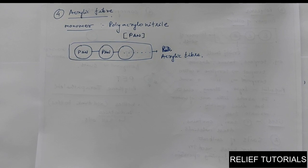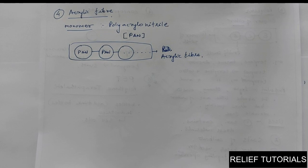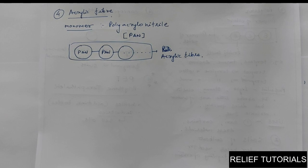Each fiber is made from a particular type of monomer. Rayon is made from cellulose monomer, nylon is the polymer of amide monomer, polyester is the polymer of ester monomer, and acrylic fibers are the polymer made from polyacrylonitrile (PAN) monomer. PAN is normally obtained from petroleum, so most synthetic fibers — nylon, polyester, and acrylic — are made from petroleum products and are totally synthetic.